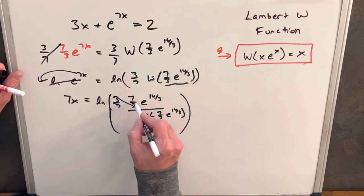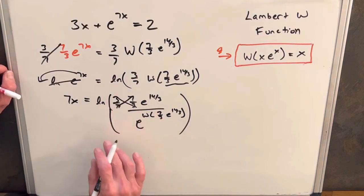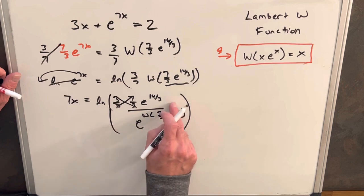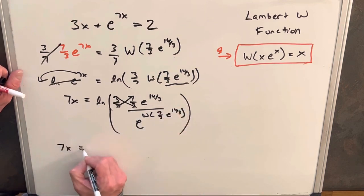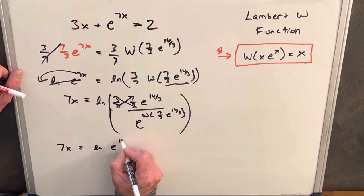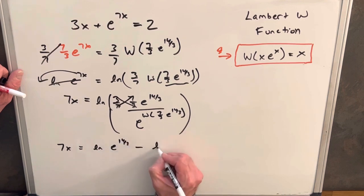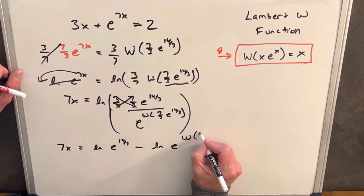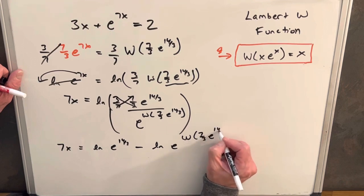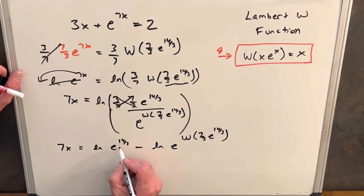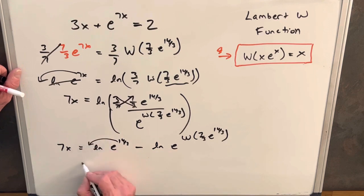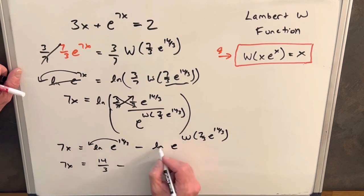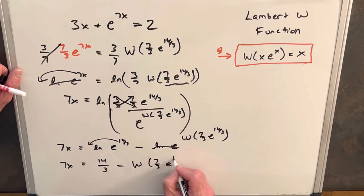So the nice thing here is these cancel and that's just one. And then we can use the property of natural log to split up the numerator and denominator. So we'll rewrite this as 7x equals ln e to the 14 thirds minus ln e^(W(7/3 * e^(14/3))). But then here when we pull this out, we just have 14 thirds here. And then here the ln and e cancel. So we're just going to have the Lambert W expression. So we're minus W(7/3 * e^(14/3)).